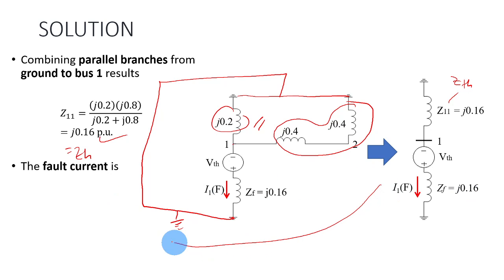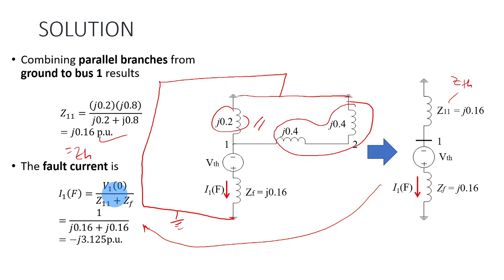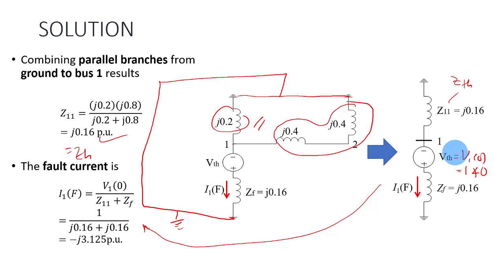From this reduced network, you can calculate the fault current using the formula. It's basically the fault voltage V1 before the fault, which is equal to 1 at an angle of 0. We assume all the voltages at all buses are 1 per unit. Unless you are given a certain value — if the value is not given, always assume it's 1 per unit. In normal condition, the system will try to fix the voltage at all locations at 1 per unit, meaning 100% rated value. For example, if a bus is rated at 132 kV, then 1 per unit equals 132 kV.